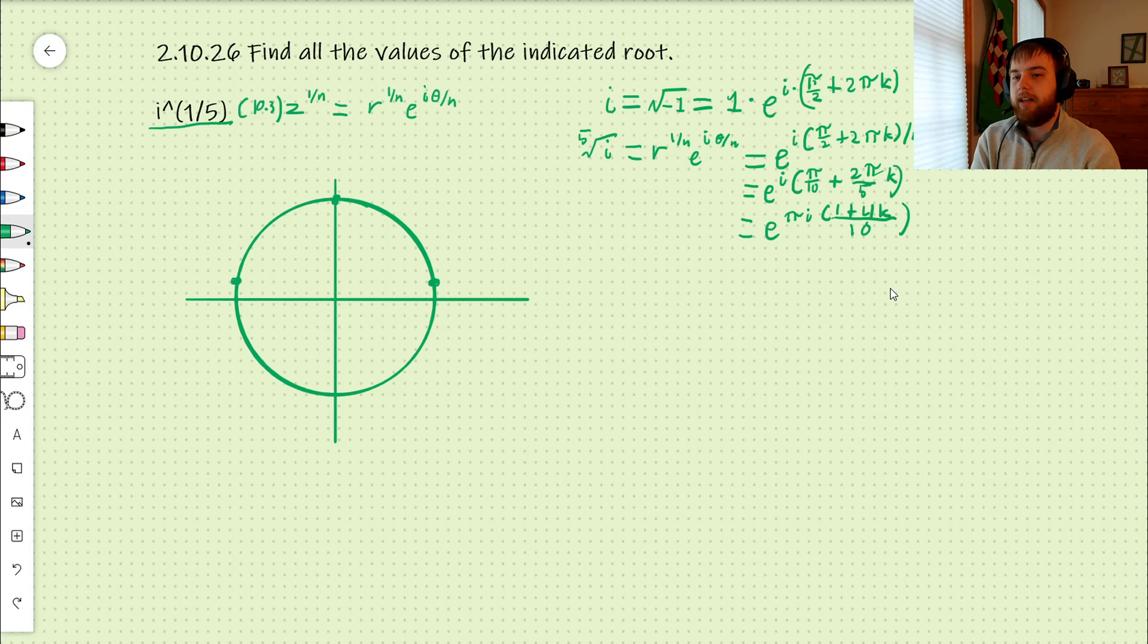And then our next one is 13 pi over 10. And then our last one is 17 pi over 10. So if you look, this forms a pentagon, which is not a coincidence.